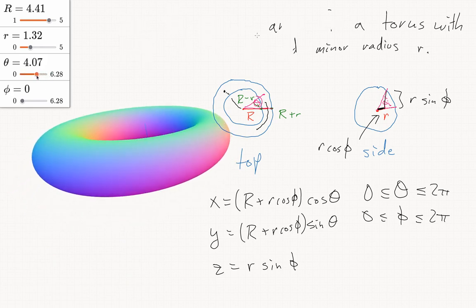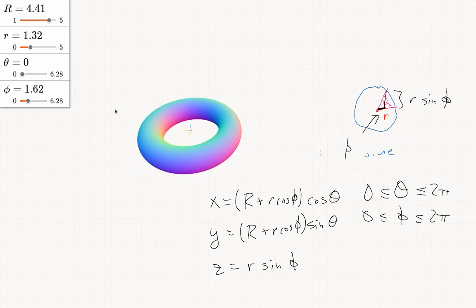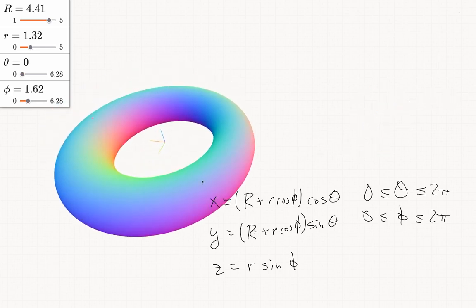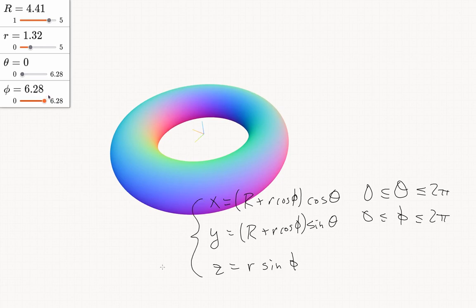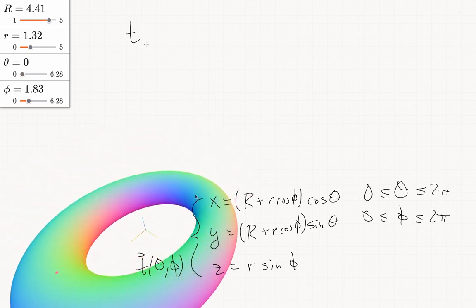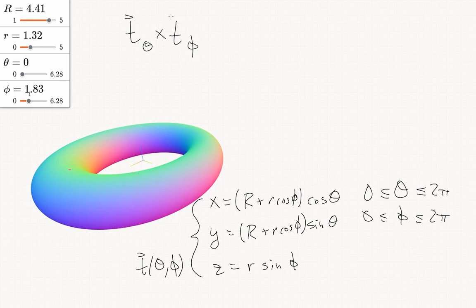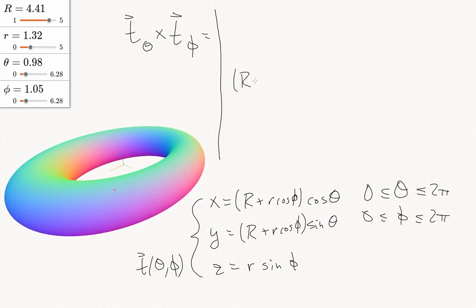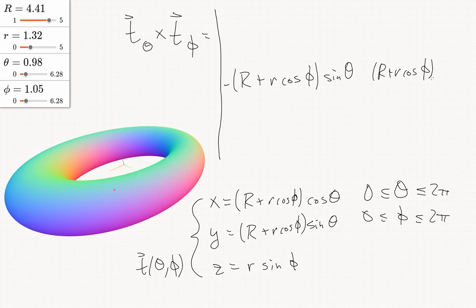Now we can go ahead and calculate the tangent vectors and from there the surface area. We call this T of theta and phi. So T sub theta cross T sub phi: differentiating with respect to theta gives the second row as negative (R plus r cos phi) sin theta, (R plus r cos phi) cos theta, and 0.